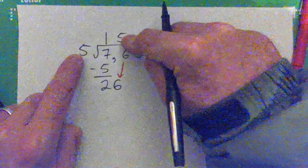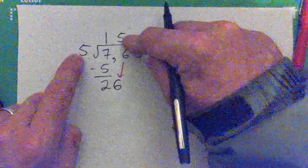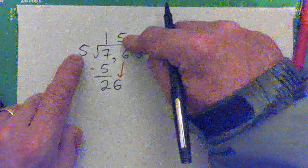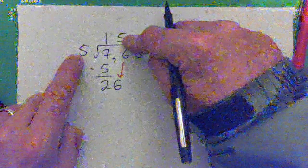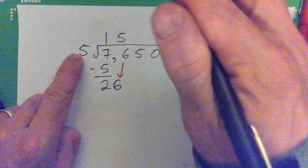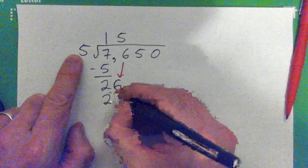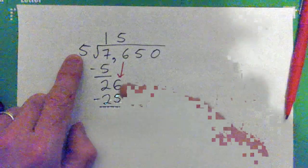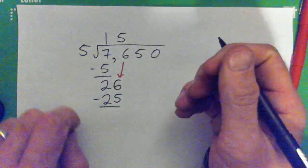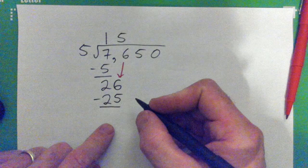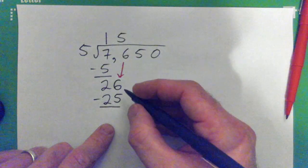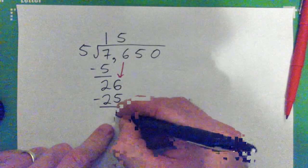Five. Now take this number, multiply it by this number. Five times five is 25, write that there. Now subtract. Just one, and now you bring this number down here.